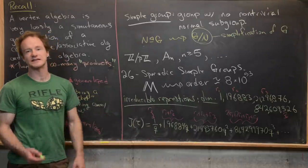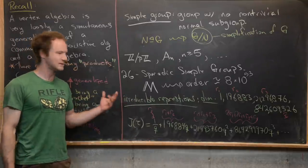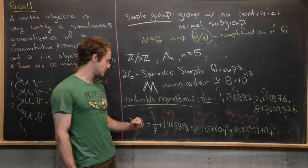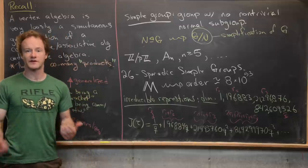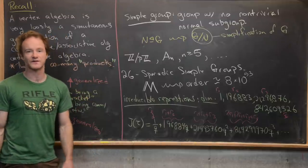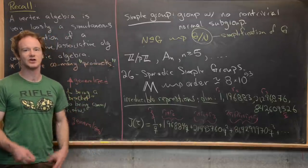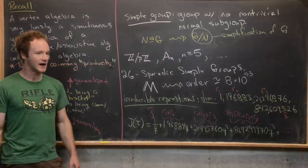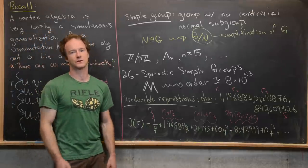So Thompson looked at this and he said, oh, well, I mean, obviously, this must mean that there is some sort of connection between the monster group and this number theoretic object, this analytic J function. And John Conway said, no, that's just moonshine. You're crazy. But it turns out there was and that's the next part of our story.